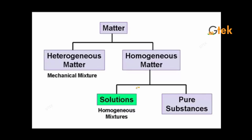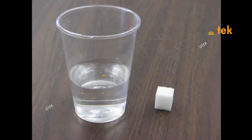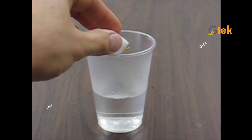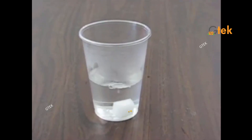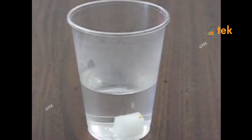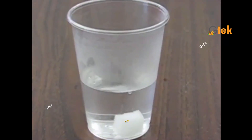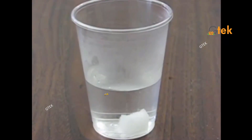Let's move on to a practical experiment in the gtech laboratory, showing how solutions are created. Solutions are created by two major things: one is the solvent and the other is the solute. I'm going to take a solvent in a small tumbler-type glass and I'm putting in a sugar cube.